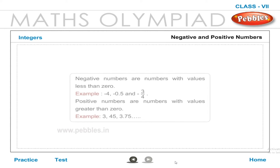Negative numbers are numbers with values less than 0. Examples: −4, −0.5, −3/4. Positive numbers are numbers with values greater than 0. Examples: 3, 45, 3.75, and so on.